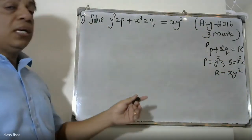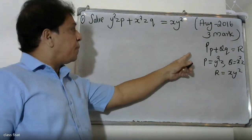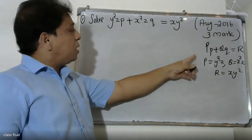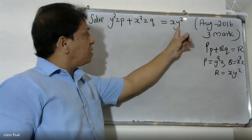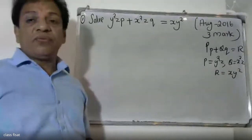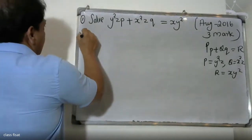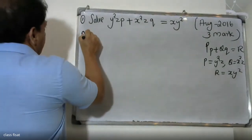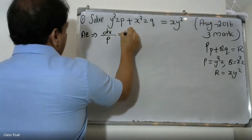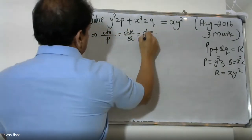Now, p, q, and r: we will select small p, small q, and the coefficient of capital Q. The right answer: r is equal to x y-squared. Then we will write the auxiliary equations: dx by p, dy by q, dz by r.